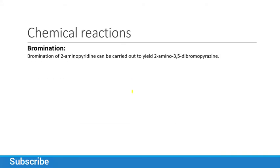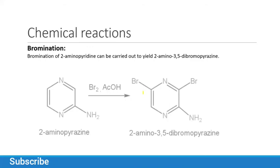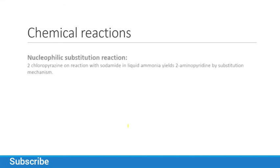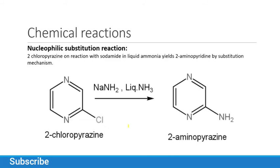For bromination: 2-aminopyrazine reacts with bromine to yield 2-amino-3,5-dibromopyrazine. This is also under drastic conditions. All electrophilic substitution reactions of pyrazine take place under drastic or violent conditions.